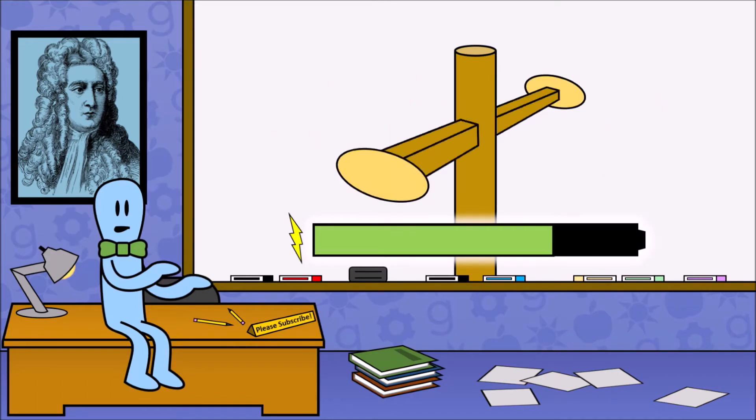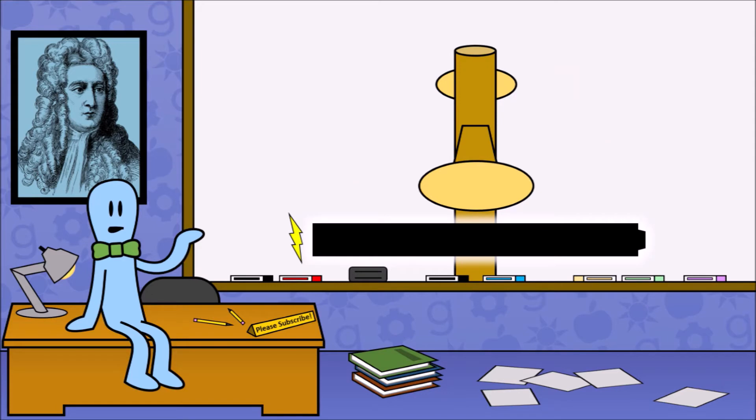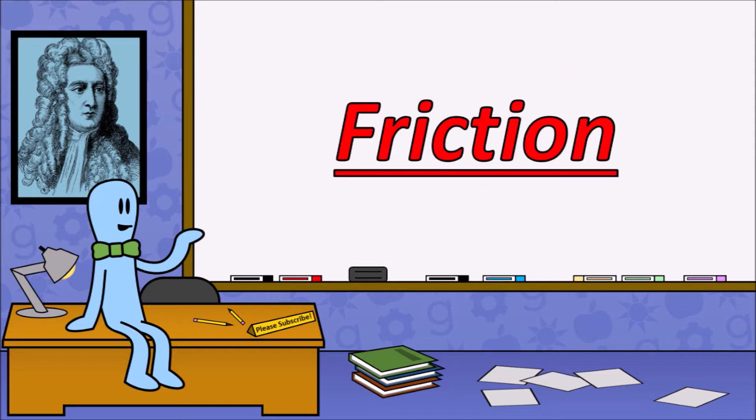So, in theory at least, a perpetual motion machine could only work as long as nothing takes energy out of the system. The problem then is that there is always something taking energy out of the system. Friction.